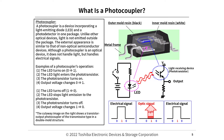What is a photocoupler? A photocoupler is a device incorporating a light-emitting diode (LED) and a photodetector in one package. Unlike other optical devices, light is not emitted outside the package. The external appearance is similar to that of non-optical semiconductor devices. Although a photocoupler is an optical device, it does not handle light externally but handles electrical signals.